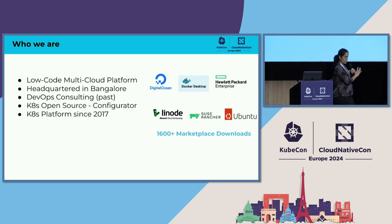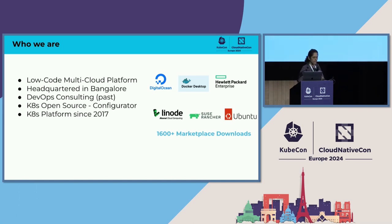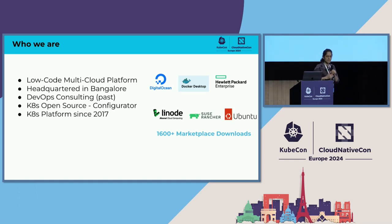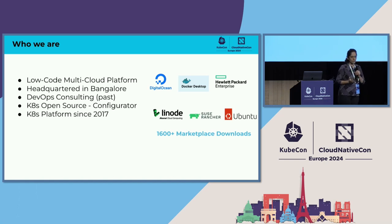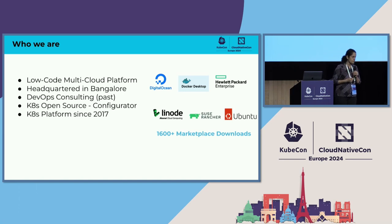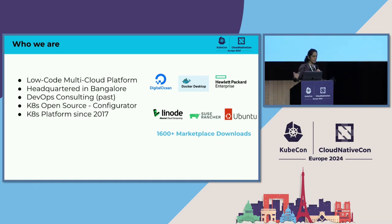Just a quick word about who we are. We are a low-code platform company. We are building an IDE for Kubernetes, making things simpler for Kubernetes users. We are headquartered in Bangalore, and we have a distributed team. We started off as a DevOps consulting firm offering CI-CD automation for retail customers across India and the US. We also contributed and maintained a project called Configurator, which helps you version control config maps and secrets on Kubernetes. Since 2017 we are a platform company, and we have about 1,600 plus downloads across all our marketplace distributions.